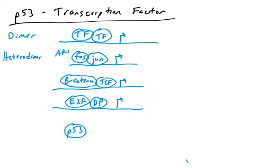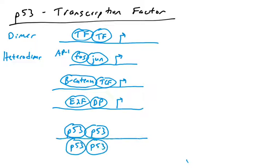What about p53? It forms homotetramers. All four subunits of the tetramer are made of p53 molecules. Unlike the heterodimers we just discussed, when p53 functions as a transcription factor it works as a homotetramer — all four molecules are p53, they tetramerize, and all four of them bind to the DNA.